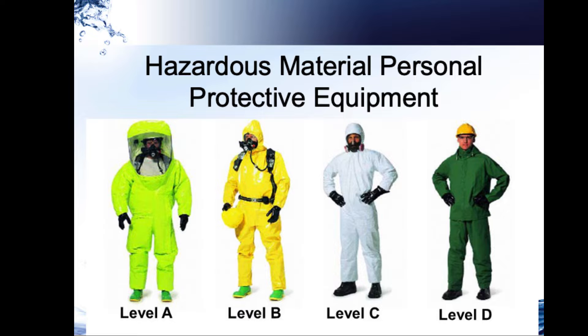Both level A and level B use supplied air. What's the difference between B and C? Between B and C, our air is being treated, but if you can drop down to level C it means you absolutely know what the contaminant is, you're able to measure its concentration, and find a cartridge respirator suitable for the hazardous materials incident.